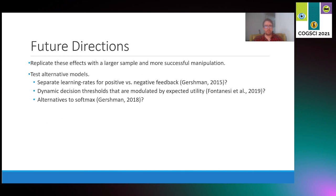For future directions, we're interested in replicating these effects with a larger sample and more successful manipulations, specifically for sadness and desire. We're currently analyzing data from a newer study with 200 plus participants and look forward to sharing those results in the near future. We're also interested in testing alternative models. Some examples of modifications we'd like to make are separate learning rates for positive versus negative feedback, dynamic boundaries that are modulated by expected utility in a similar way to what we did for drift rates, and alternatives to the softmax logistic choice rule.